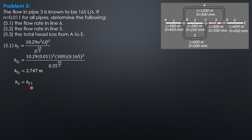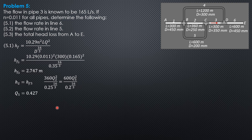Then HF2 equals HF5. Since 10.29 and N² are common, they cancel out. Proceeding with length times Q² over diameter to the 16/3: 360 Q2² over 0.25 raised to 16/3 equals 600 Q5² over 0.2 to the 16/3. Expressing Q5 in terms of Q2 gives Q5 equals 0.4272 Q2.